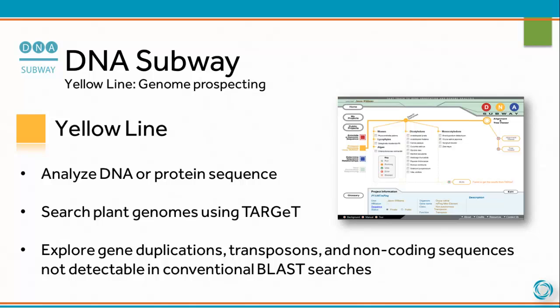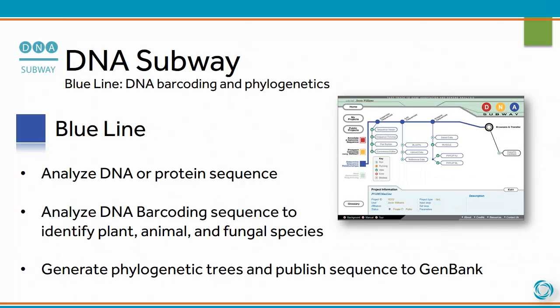The yellow line also covers non-coding sequences not detectable in conventional BLAST searches. The blue line is for DNA barcoding and phylogenetics. Use the blue line to analyze DNA or protein sequence, identify plant, animal, and fungal species using DNA barcode sequences, generate phylogenetic trees, and publish sequence to GenBank.